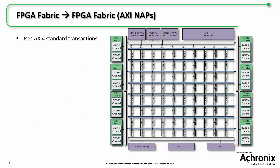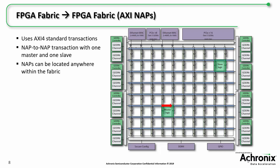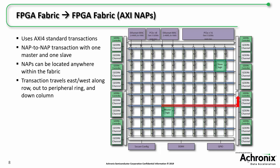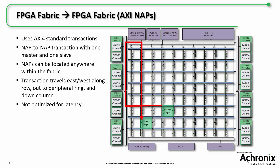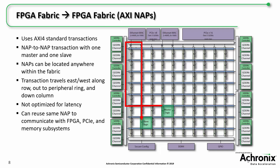Another important distinction is which type of NAP to use when communicating between points in the fabric. For AXI NAPs, these are point-to-point transactions using the AXI-4 standard. There is master logic that initiates the transaction and slave logic that responds. One benefit of AXI NAPs is they can communicate between NAPs located anywhere in the fabric — the transaction travels east or west on the row, around the peripheral ring, and down the column. This should be kept in mind because the transaction path affects all AXI NAPs, even if they are located close to each other. AXI mode is not optimized for latency when sending transactions between points in the fabric; however, it is optimized when communicating between the fabric and an interface, and the same NAP can potentially be used to communicate with GDDR6, PCIe, and another NAP in the fabric, allowing for code reuse.